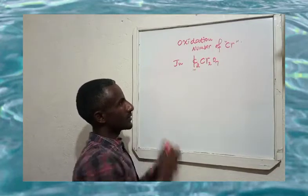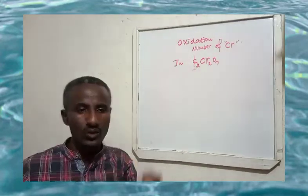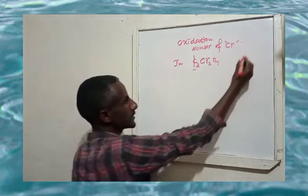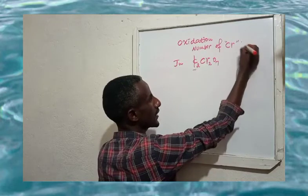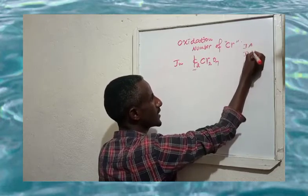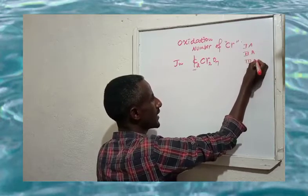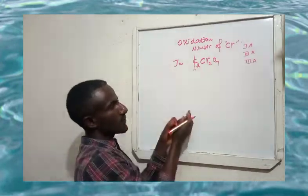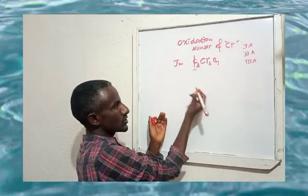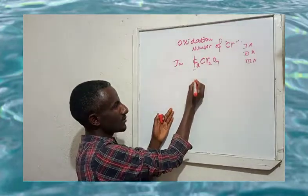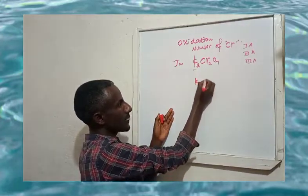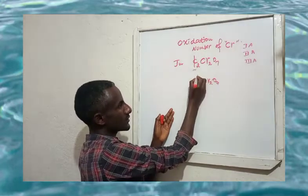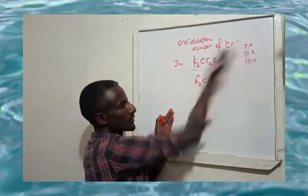First, we use the rule that group 1 and group 2 metals have fixed oxidation numbers. Potassium is a group 1 metal, so potassium has an oxidation number of plus 1.